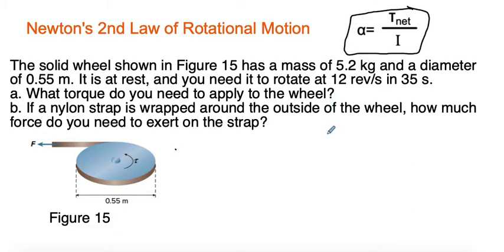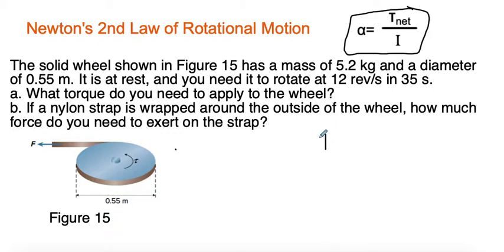We remember Newton's second law is force equals mass times acceleration. For rotational systems, we relate the two. Another way to write this equation, which you might see more often, is torque equals angular acceleration times moment of inertia. Inertia here is just an object's tendency to stay in motion or stay at rest, and it depends on the object's mass and shape.